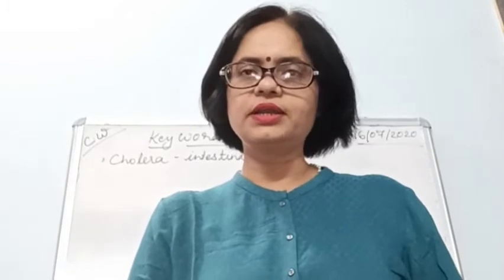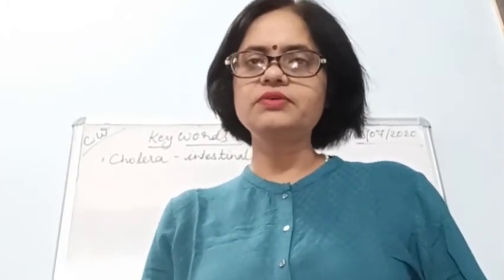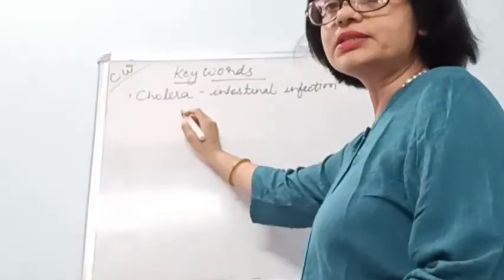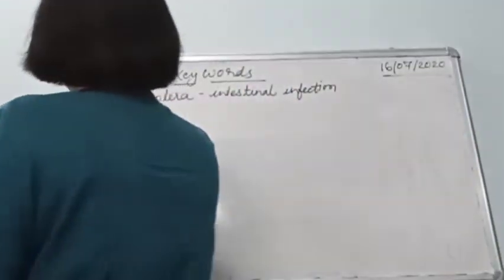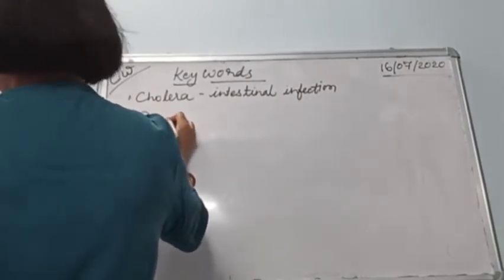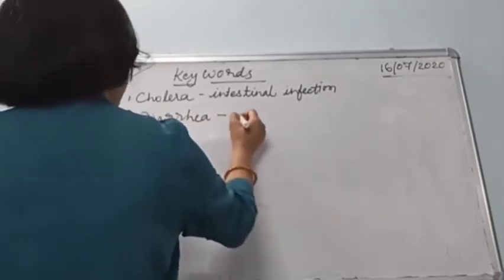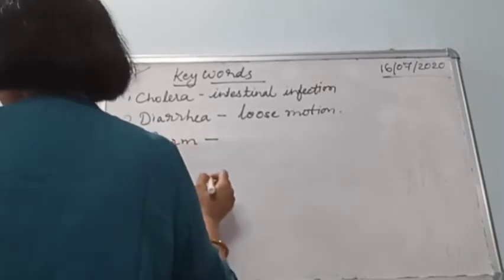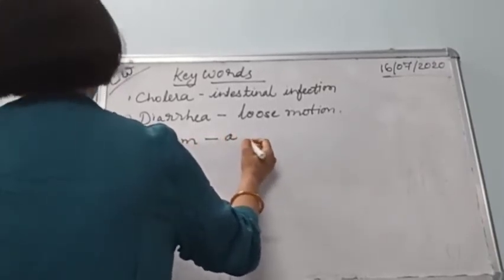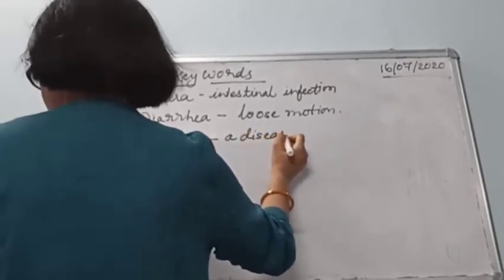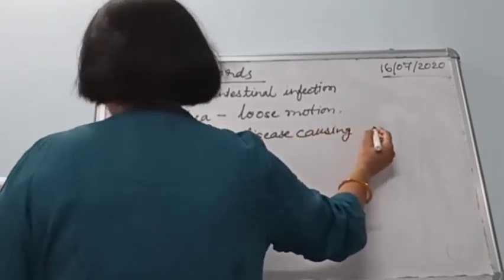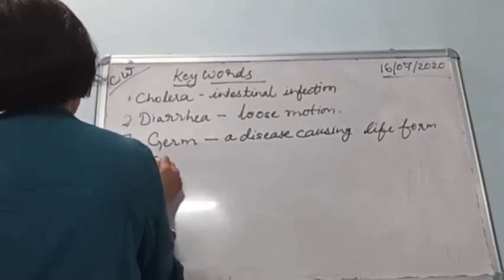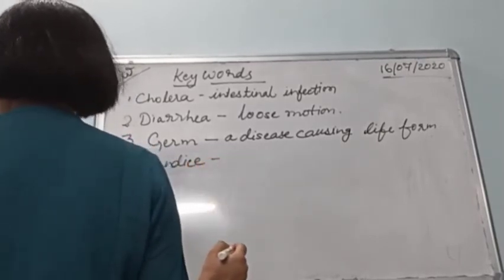Today's homework is to learn and write the keywords in your copy. I am going to write them on the whiteboard and you must copy and learn them. The first word is cholera, which means intestinal infection. The second word is diarrhea, which means loose motion. The third word is germ, which is a disease-causing life form. Then comes jaundice, which means infection of the liver.